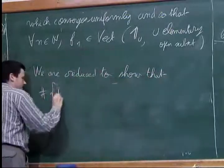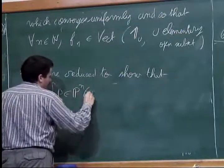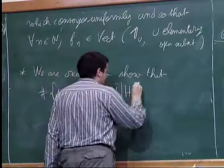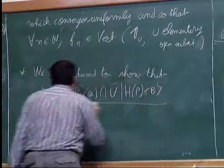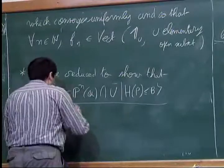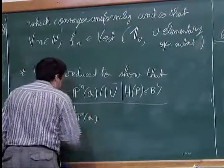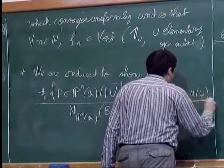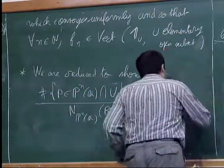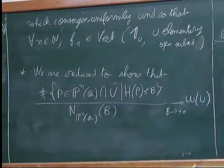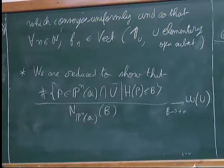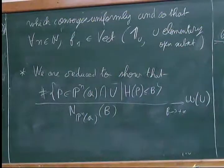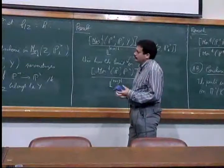We are reduced to showing that the number of P in P^n(A_Q) intersected with U such that the height of P is less than B, divided by the total cardinal, goes as B → ∞ to ω(U). In fact, the statement I'm about to prove will give some upper bound for the error term.